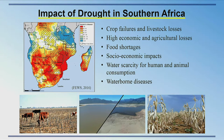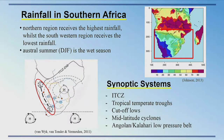Southern Africa has highly variable rainfall, ranging from the Namib Desert on the west coast to the more tropical Mozambique side. The northern and northeastern region receives the highest rainfall, whilst the southwestern region receives the lowest. The majority of the region receives summer rainfall during the December–January–February period. Synoptic systems bringing rainfall include the shifting of the ITCZ, a tropical temperate trough across the continent, cutoff lows, mid-latitude cyclones affecting the southwestern tip in winter, and the Angolan–Kalahari low pressure belt along the west coast.